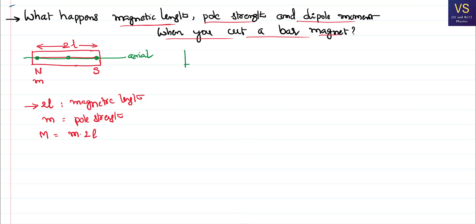This is the bar magnet, and we cut along the axial line exactly at the middle. We cut along the axial line into two equal parts.